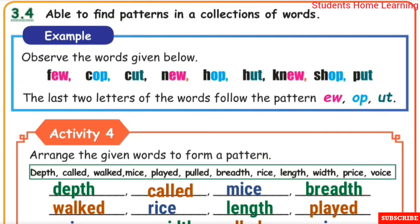Able to find patterns in a collection of words. Words can form patterns by their endings. For example, observe the words given below: few, cop, cut, new, hop, hut, new, shop, put. The last two letters of the words follow the pattern: E-W, O-P, U-T, E-W, O-P, U-T.